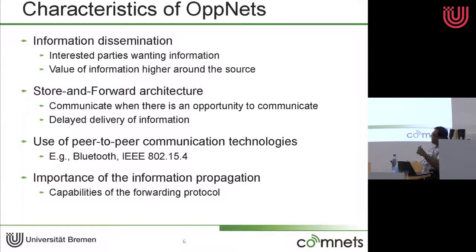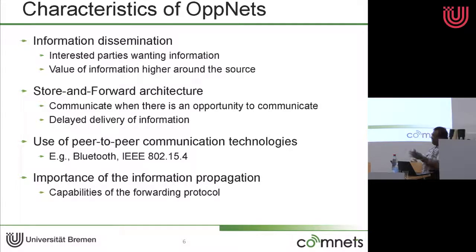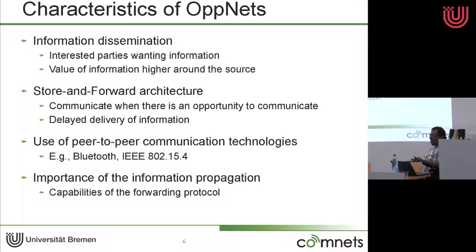Another important aspect of opportunistic networks is the use of peer-to-peer communication technologies. We talk of Bluetooth, 802.15.4, and such technologies. Wireless LAN, with Wi-Fi Direct, is also a candidate, though Wi-Fi is a bit much for opportunistic networks. Still, Wi-Fi Direct remains a candidate. An important aspect of opportunistic networking is dissemination — there are many protocols — and it is important to have the right forwarding protocol so that information can spread to the right people at the right time.